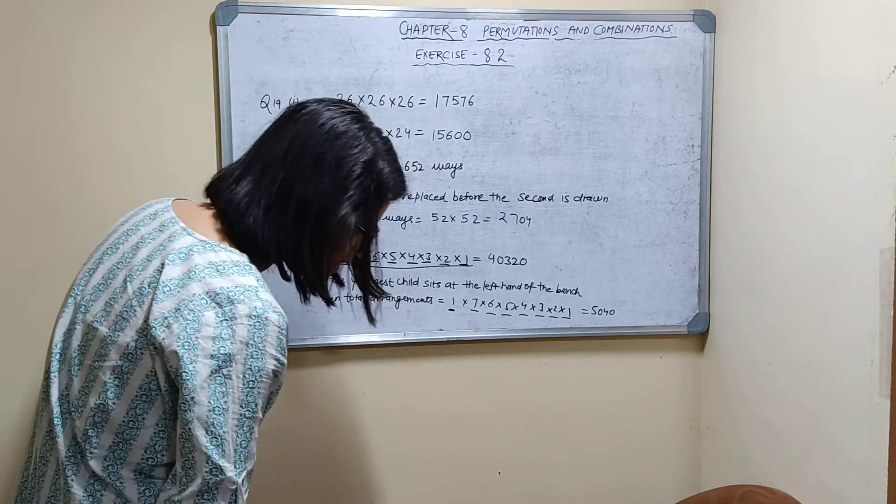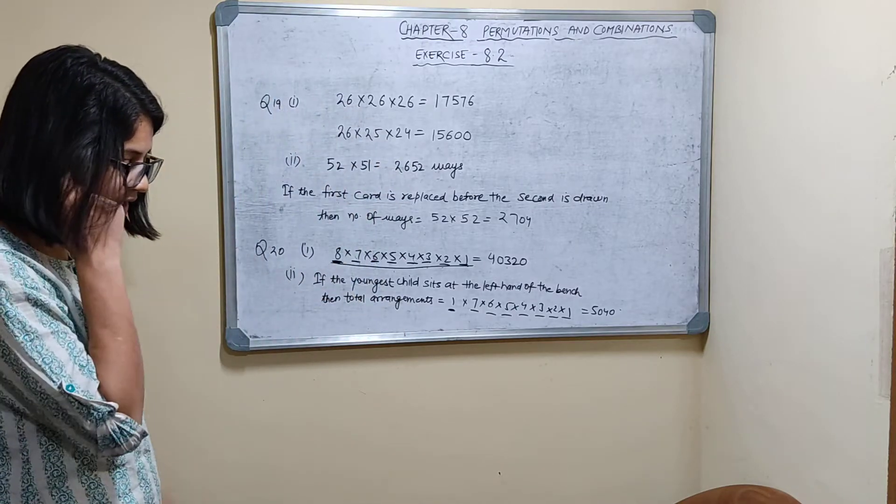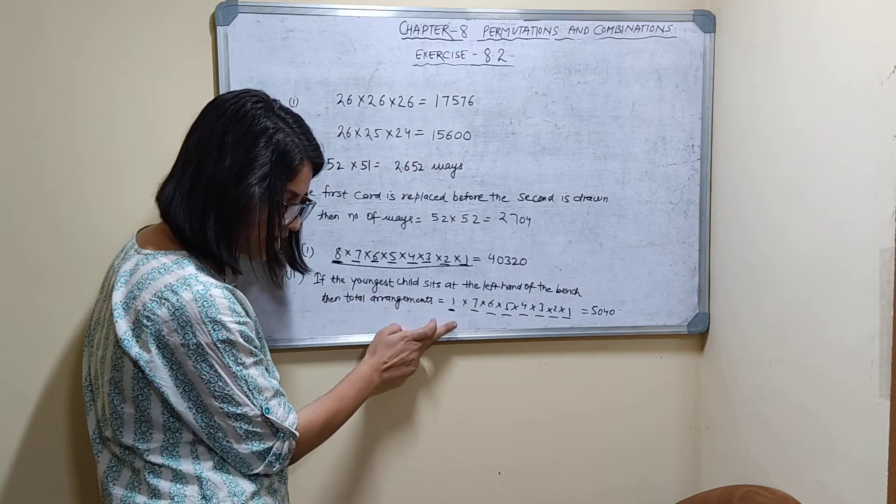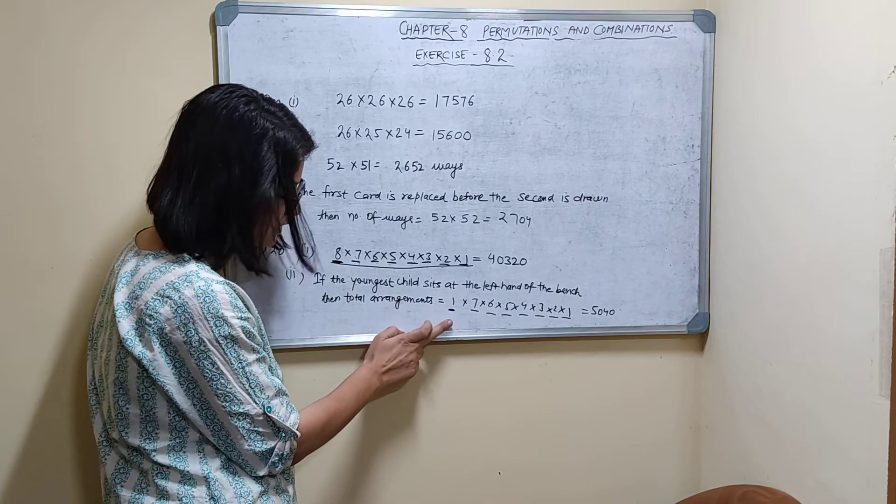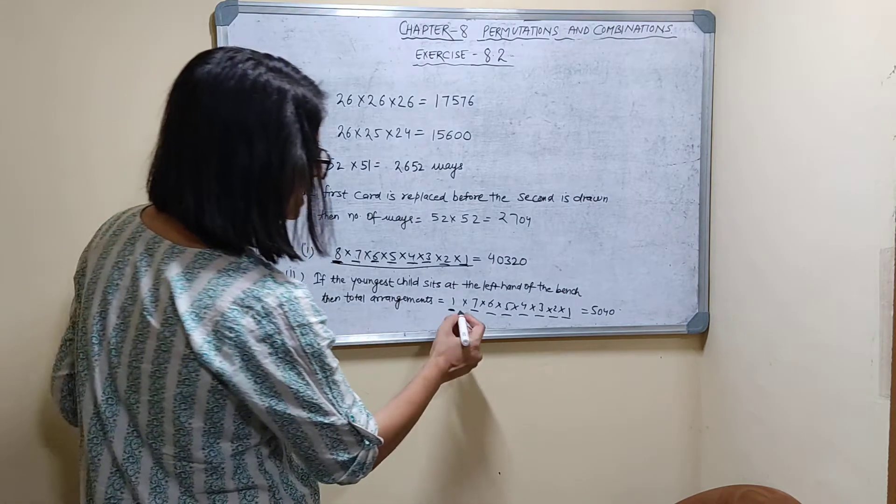Second part. How many ways, how many arrangements are possible if the youngest child sits at the left hand end of the bench?